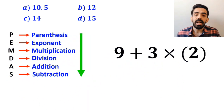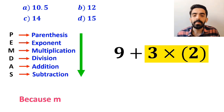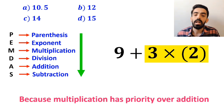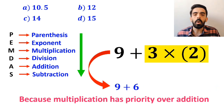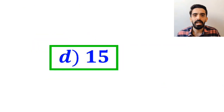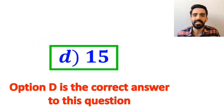And in the next step, it's time for the multiplication between 3 and 2, because multiplication has priority over addition. So, instead of this expression, we can write 9 plus 6, which ultimately gives us the answer 15. Therefore, option D is the correct answer to this question.